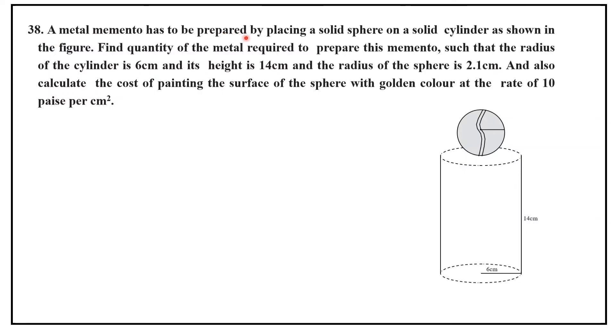A metal memento has to be prepared by placing a solid sphere on a solid cylinder as shown in the figure. Find the quantity of the metal required to prepare this memento such that the radius of the cylinder is 6 cm and height is 14 cm and the radius of the sphere is 2.1 cm. And also calculate the cost of painting the surface of the sphere with golden color at the rate of 10 paise per centimeter square.